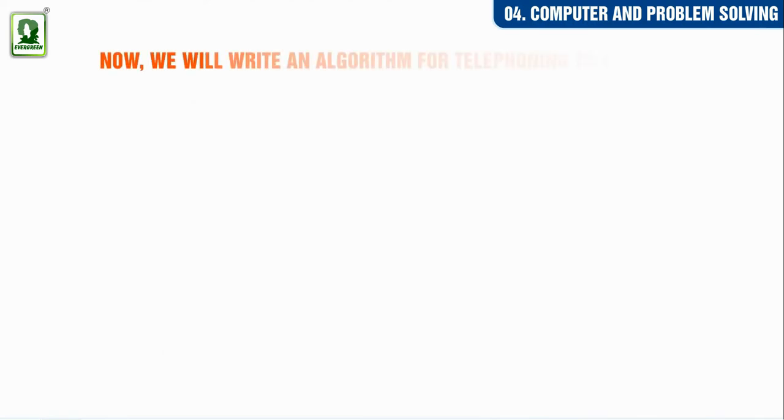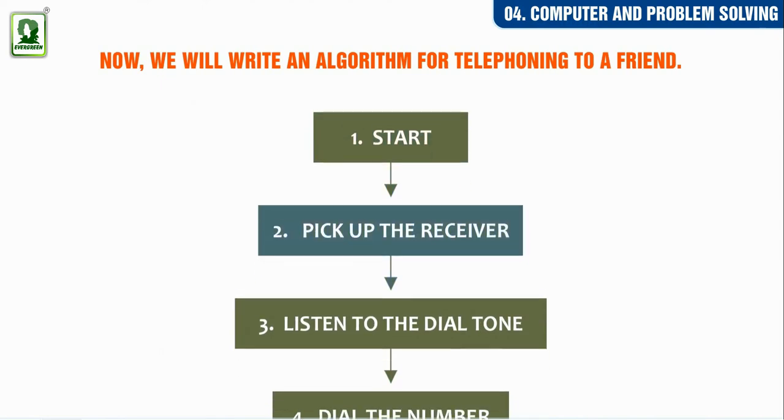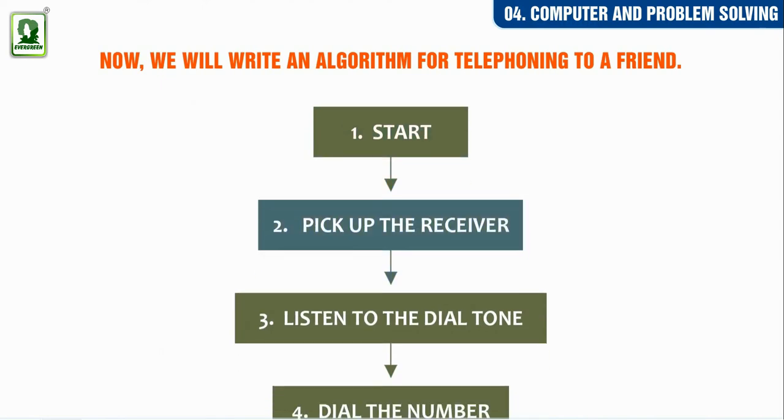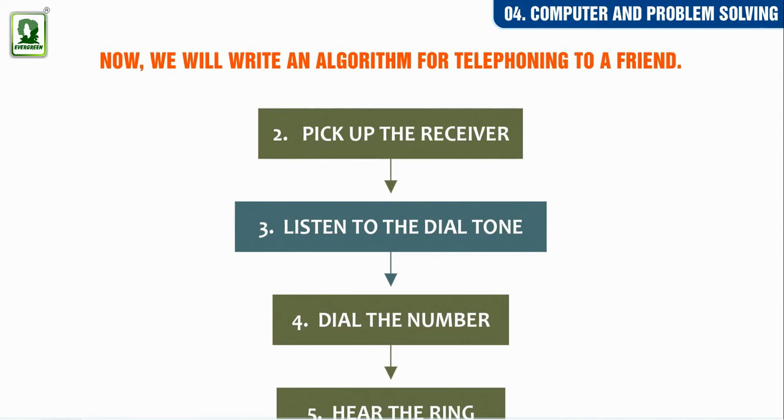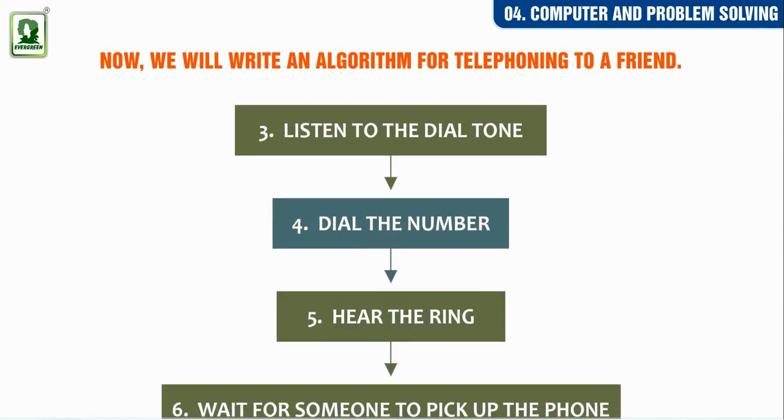Now, we will write an algorithm for telephoning to a friend. Start. Pick up the receiver. Listen to the dial tone. Dial the number.